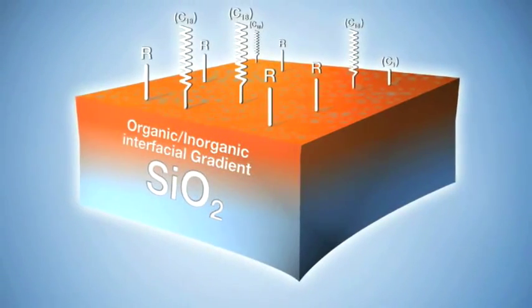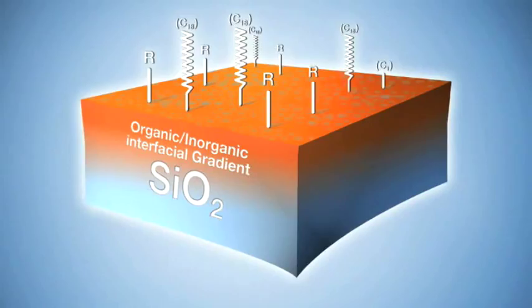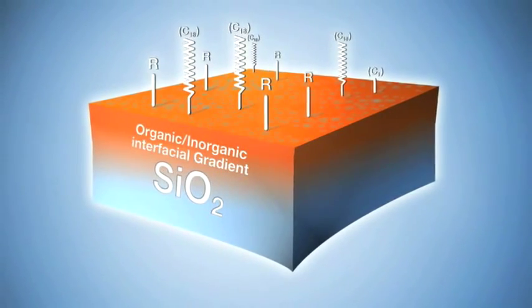Finally, the product is functionalized, in this case with C18, followed by a proprietary end-capping process. The new Chromacyl Eternity platform provides a great opportunity for developing and launching new stationary phases.